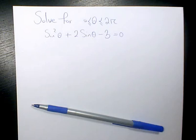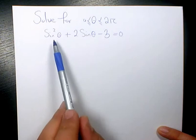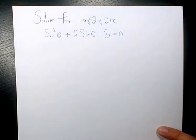What's up guys, this is Massey. Welcome to my channel. In this video, I want to show you how to solve this trigonometric equation. Here we have sin²θ + 2sinθ - 3 = 0, and theta must be between 0 and 2π.